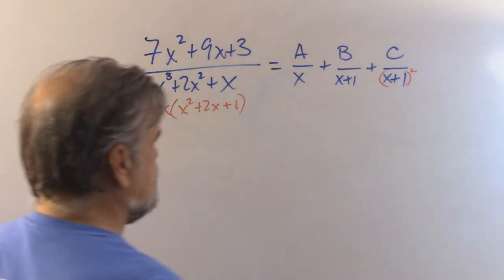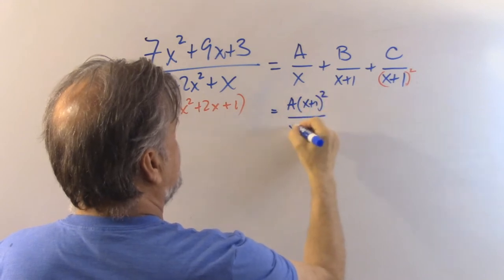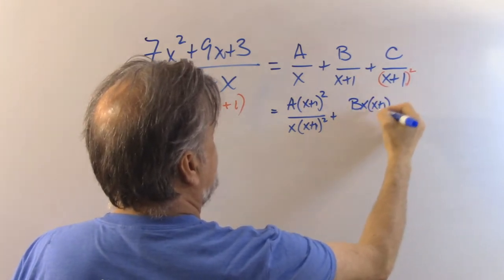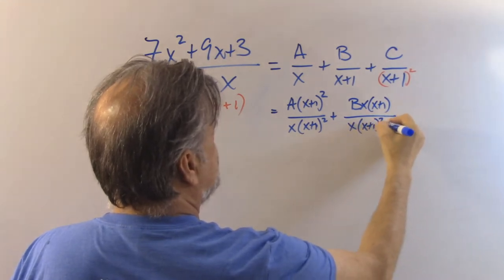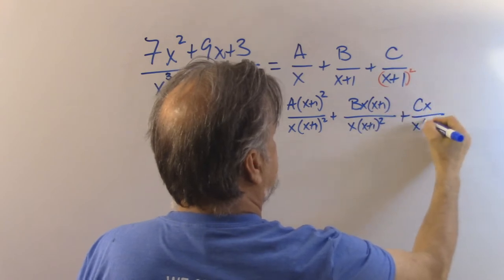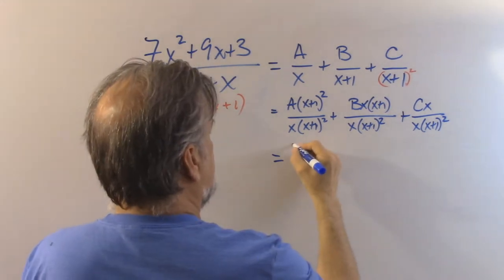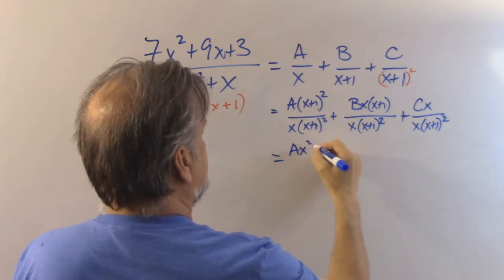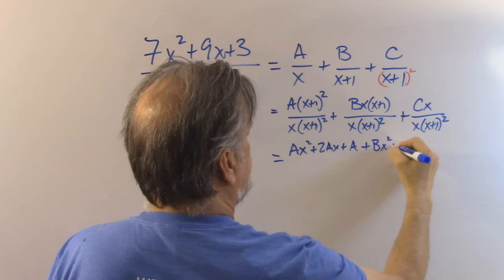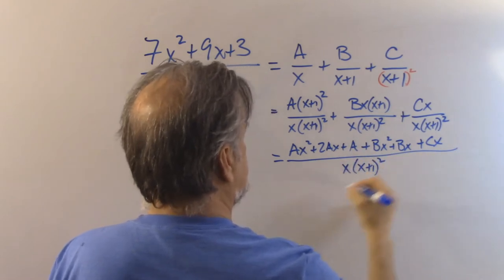Now we can get to work. So this is going to be a times x plus 1 squared over x times x plus 1 squared, plus b times x times x plus 1 over x times x plus 1 squared, making sure I multiply everything by the appropriate factors, plus cx over x times x plus 1 squared. Now I have common denominators, so I can add on through. So ax squared plus 2ax plus a plus bx squared plus bx plus cx over x times x plus 1 squared.